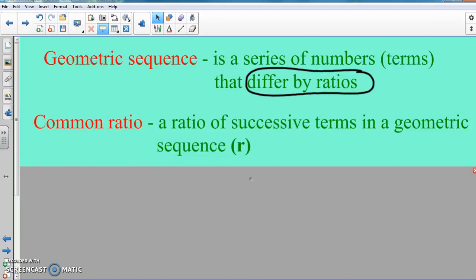Now that is considered our common ratio. And common ratio is a ratio. So a key word in there is the word ratio. Common ratio is a ratio of successive terms in a geometric sequence. And we're going to call this the letter R. So common difference is D, the letter D. Common ratio is R, the letter R.